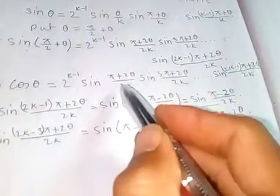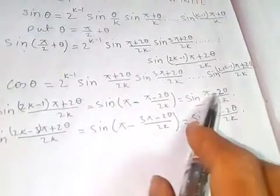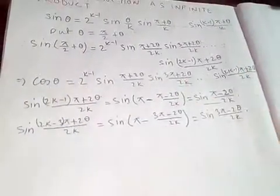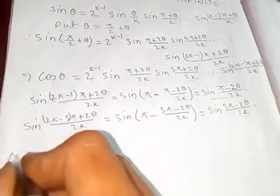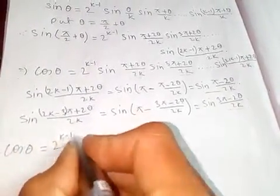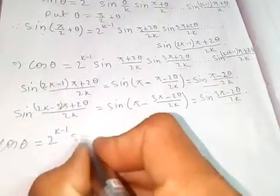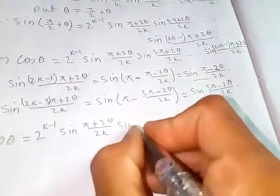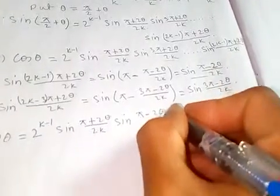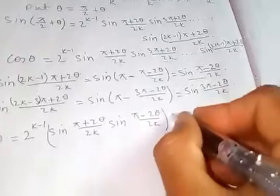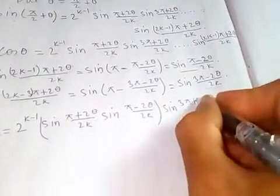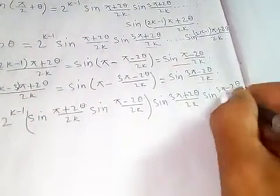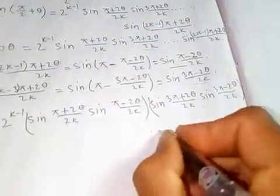The last factor and its counterpart are conjugates, and the last but one factor pair are also conjugates. So taking those, cosine theta equals 2 to the k minus 1 times sine of pi plus 2 theta over 2k times sine of pi minus 2 theta over 2k, combined with sine of 3 pi plus 2 theta over 2k times sine of 3 pi minus 2 theta over 2k, and so on.